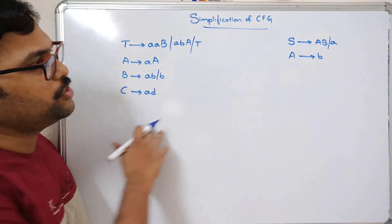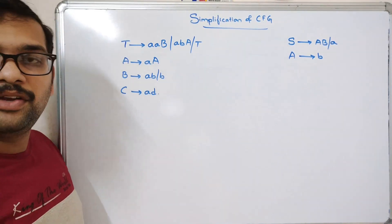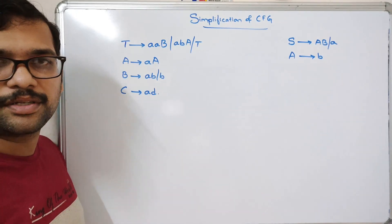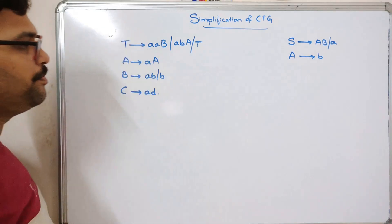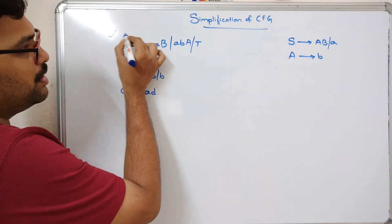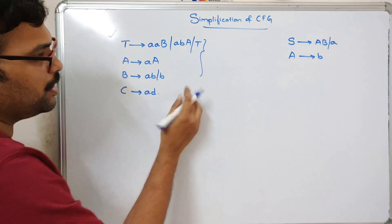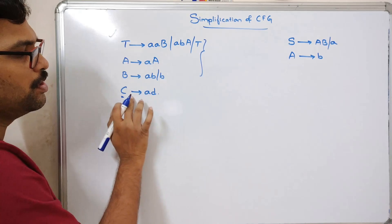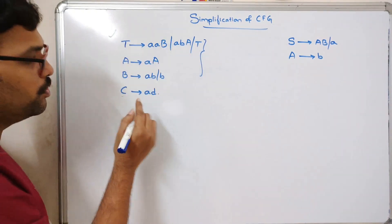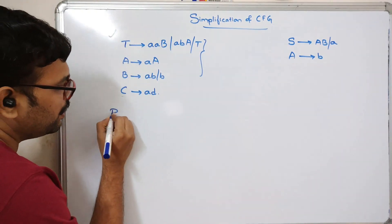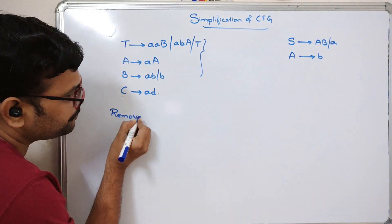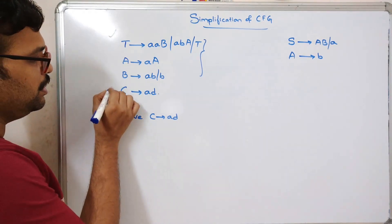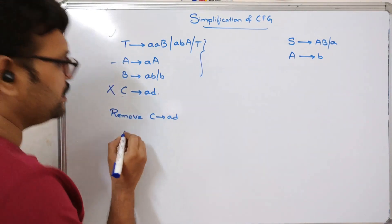We will see two examples now. We need to remove the useless productions or useless variables from these productions. In the first example, looking at the three productions, there is no non-terminal C — C is not used in any production. So we can simply remove the production C tends to AD because this is useless.